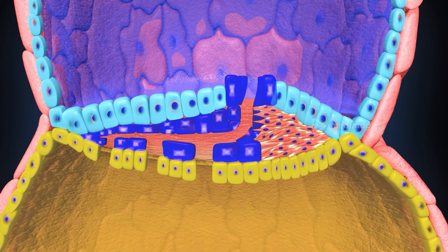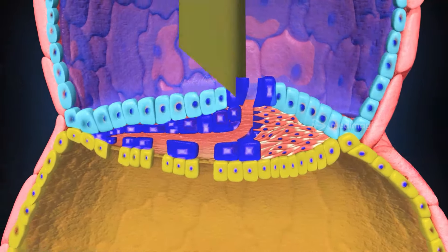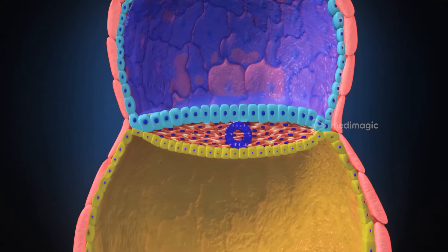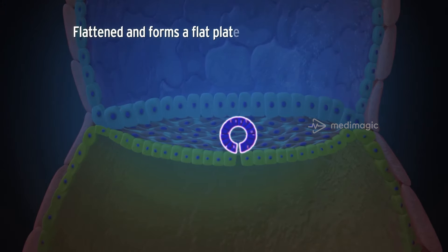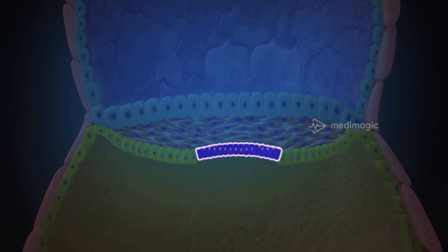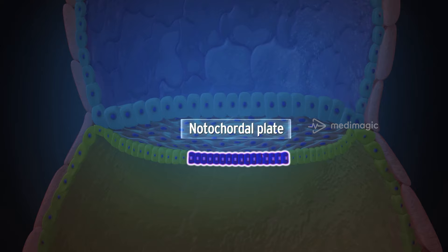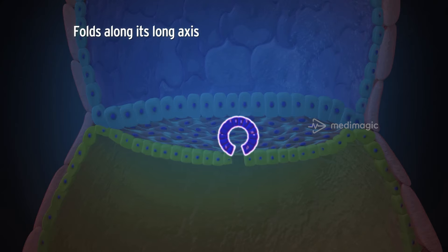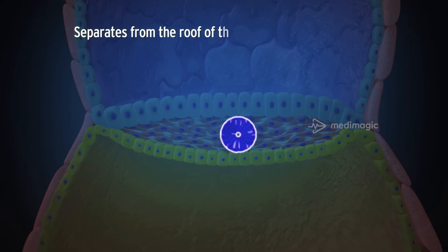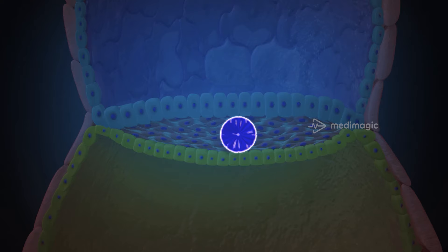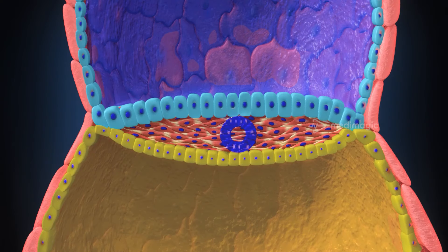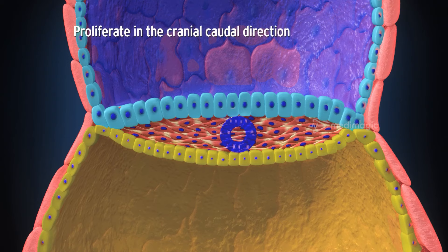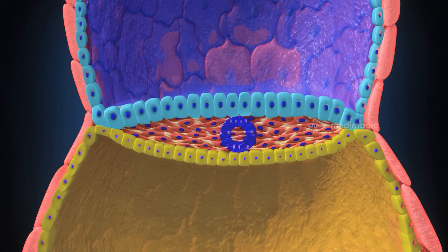The remaining part of the notochordal process becomes flattened and forms a flat plate of cells known as the notochordal plate. This notochordal plate gradually folds along its long axis and separates from the roof of the yolk sac, which is now lined by a continuous layer of endoderm. The cells of the notochordal plate begin to proliferate in the cranial-caudal direction, and these proliferating cells fold to form a solid flexible chord of cells.